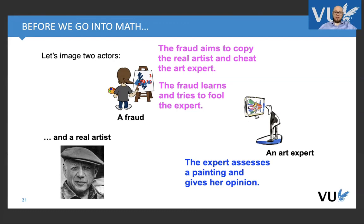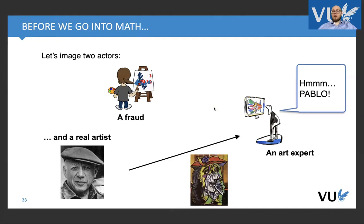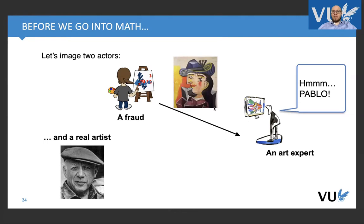We can imagine a feedback loop inside. For instance, the fraud paints something, gives it to an expert. The expert says, bollocks, this is not true. Then the fraud thinks, I need to do better. First, the fraud generates something like this, and we clearly see that this is not a good painting. The expert says clearly that this is fake. Then we provide a real picture from the real artist to verify whether the expert is good. The expert says, yes, this is Pablo Picasso. Then the fraud behaves better, and now the expert is confused.